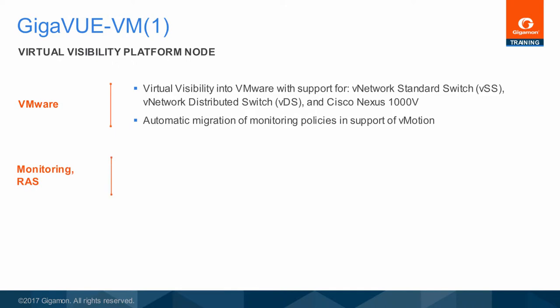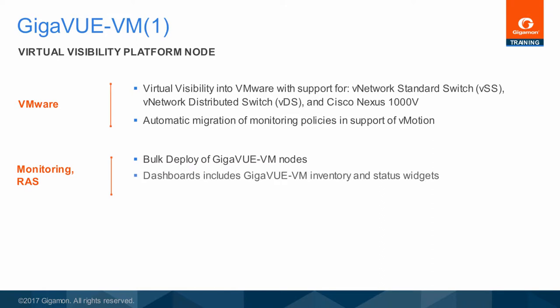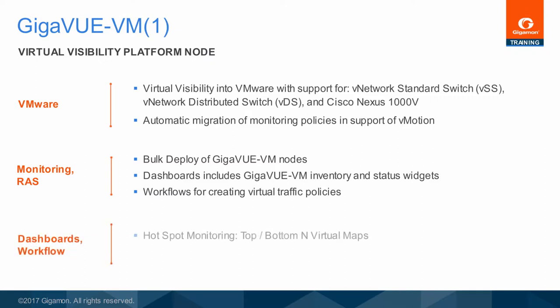Through Fabric Manager, which acts as the console for all GigaView VM actions, you can deploy and manage hundreds of nodes operating within multiple vCenter environments. Fabric Manager offers various choices for simplified workflow configuration for traffic monitoring policies. Dashboard tables and graphs show top and bottom end virtual nodes, virtual ports, and virtual maps. Selecting one presents a quick view graph of traffic for intervals from one hour to one month.